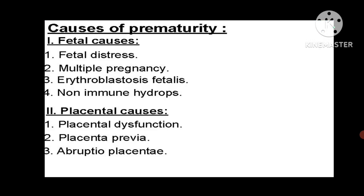Causes of prematurity: Fetal causes can include fetal distress, multiple pregnancy, erythroblastosis fetalis, non-immune hydrops, placental dysfunction, placenta previa, and abruptio placenta — conditions occurring before completing the full gestational age.